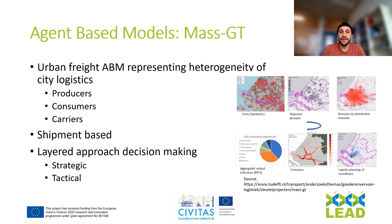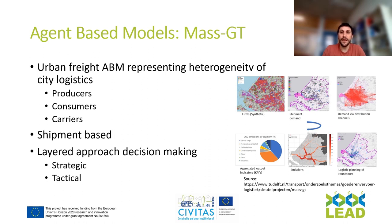MassGT also has a layered approach to decision making, separating strategic decisions — like warehouse location or supply network design — from tactical decisions such as how to organize next-day deliveries. By simulating each delivery, they add up into the network loading, allowing us to obtain KPIs such as kilometers traveled by vans, network congestion, and emissions.